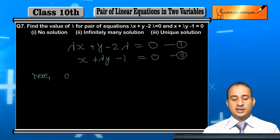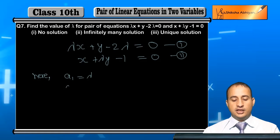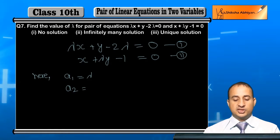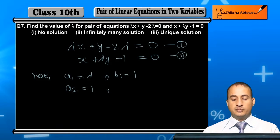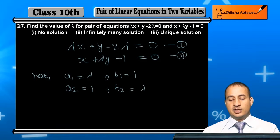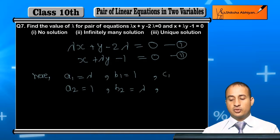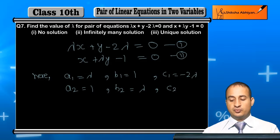From the equations: a1 equals lambda, a2 equals 1 (coefficient of x in the second equation). b1 equals 1 (coefficient of y in equation 1), and b2 equals lambda (coefficient of y in equation 2). c1 equals minus 2 lambda, and c2 equals minus 1.